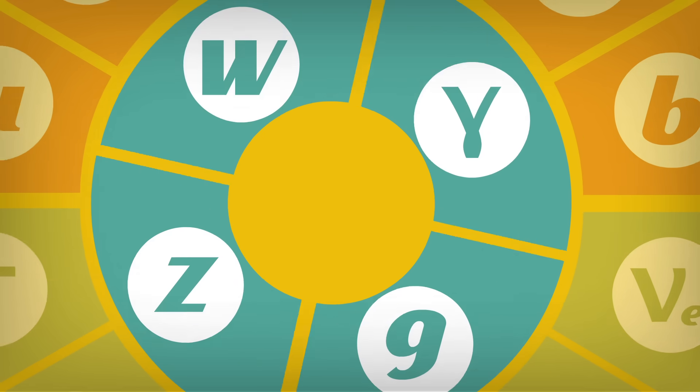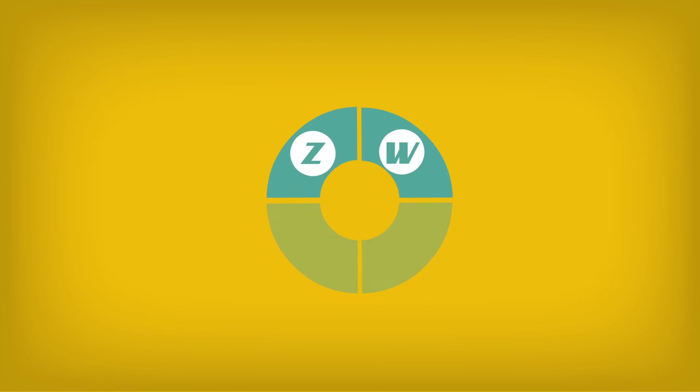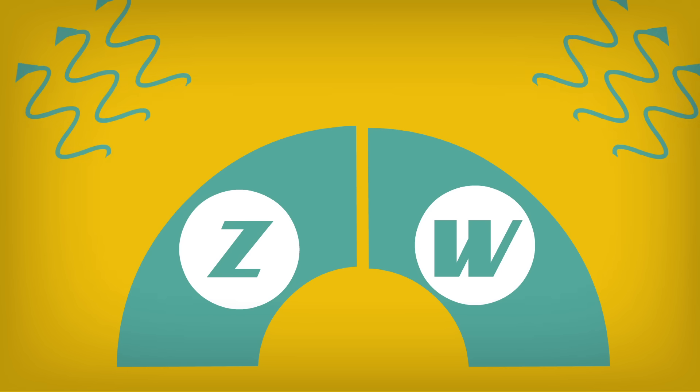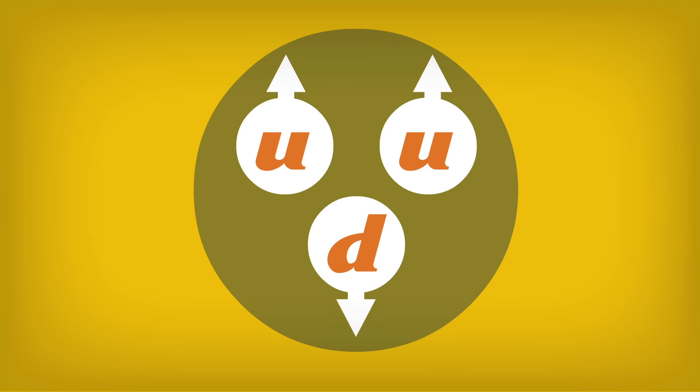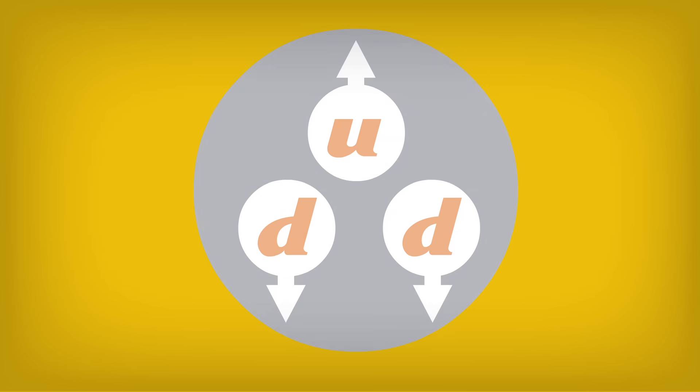Such decays involve the exchange of force-carrying particles, called the W and Z, which, unlike the photon, have mass. They carry the weak force, the final force of the standard model. This same force allows protons and neutrons to transform into each other, a vital part of the fusion interactions that drive the Sun.